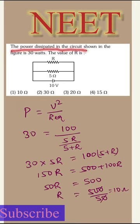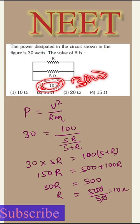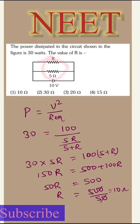The power dissipated in the circuit shown in the figure is 30 watts. The value of R is what we need to find. Here, power dissipated by the circuit is 30 watts. Both resistances are in parallel, so we can say